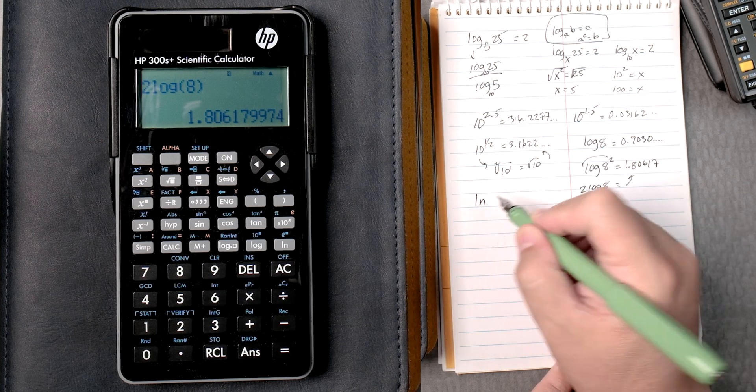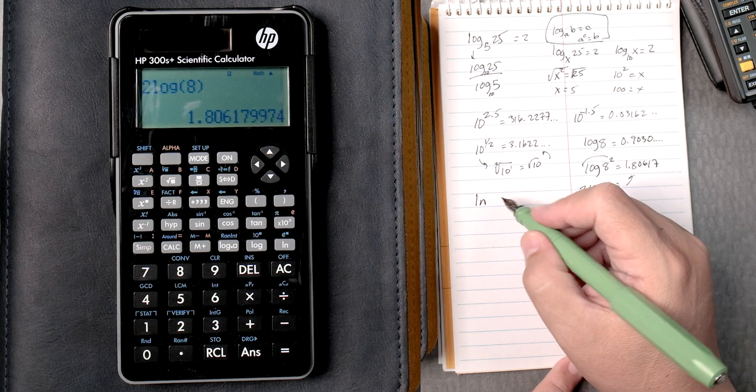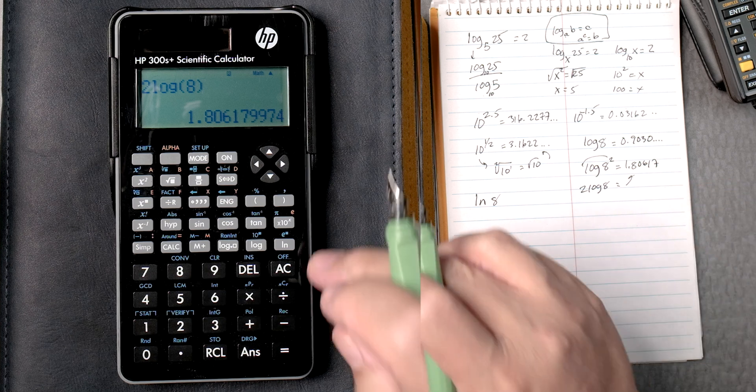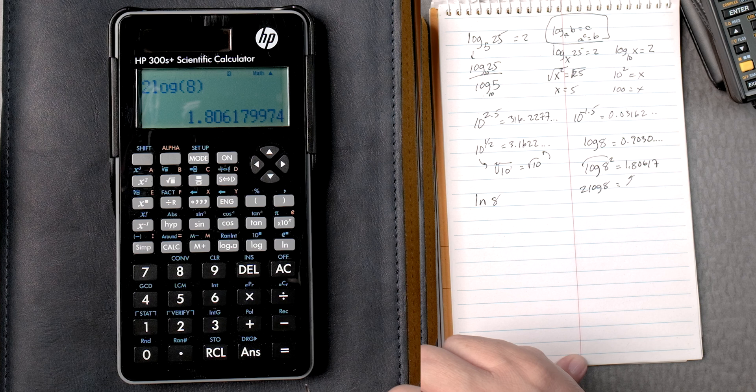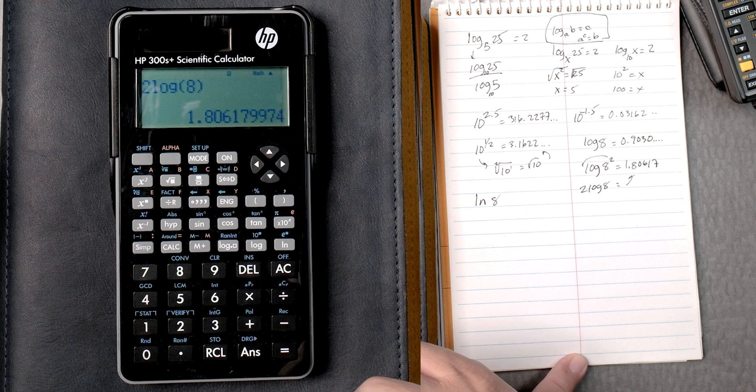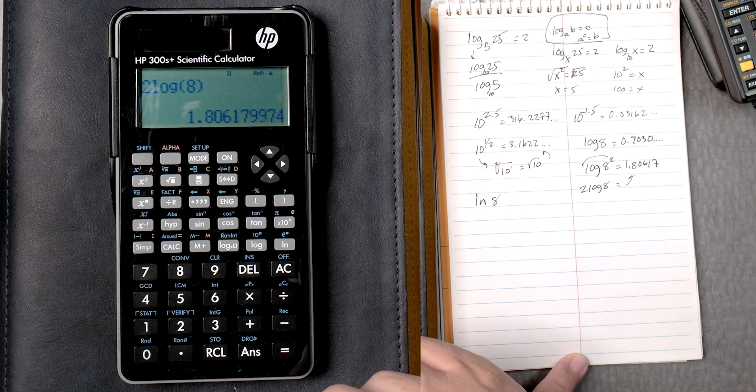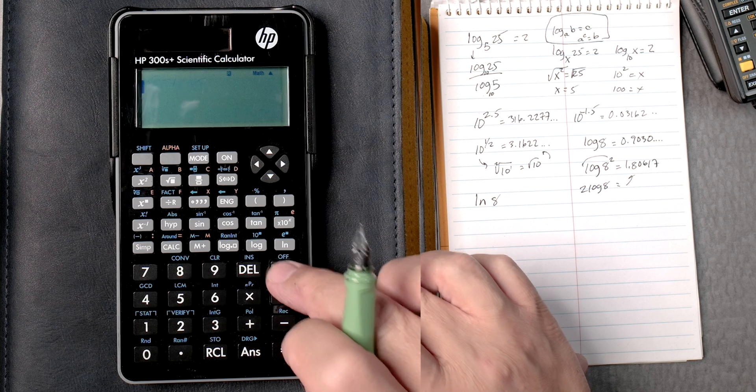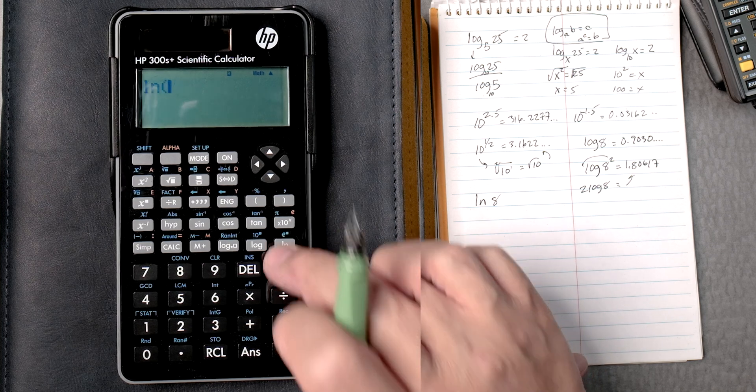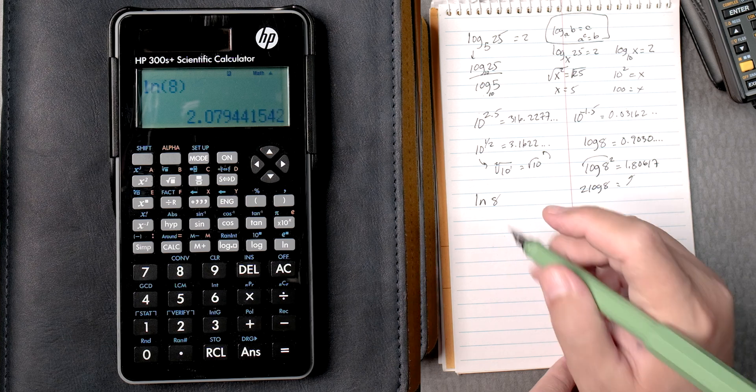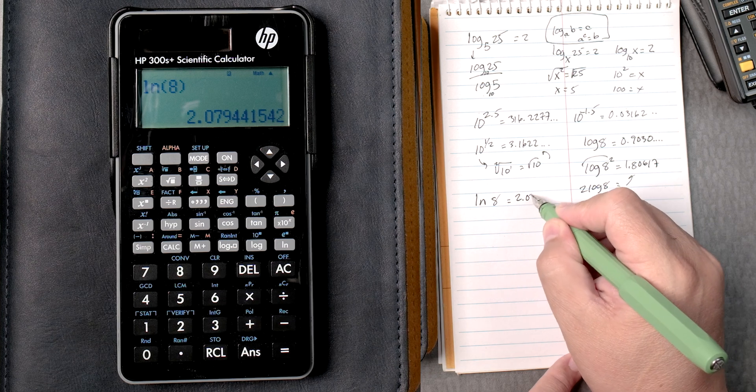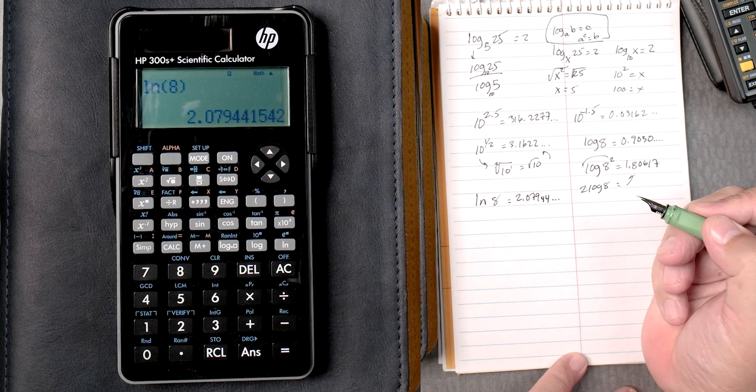Now let's do the natural log of 8. So natural log is right here, this button right here. Let's use the AC button, natural log, there we go, 8, close it, equals 2.07944, keeps going.